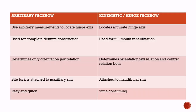Now let's look at the differences between arbitrary face bow and kinematic face bow. Arbitrary face bow uses arbitrary measurements to locate the hinge axis, whereas kinematic face bow locates the accurate hinge axis. Arbitrary face bow is used for complete denture constructions, whereas kinematic face bow is used for full mouth rehabilitation. Arbitrary face bow determines only orientation jaw relation, whereas kinematic face bow determines both orientation jaw relation and centric relation.